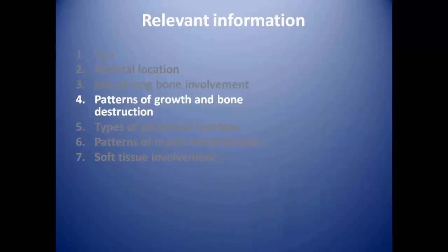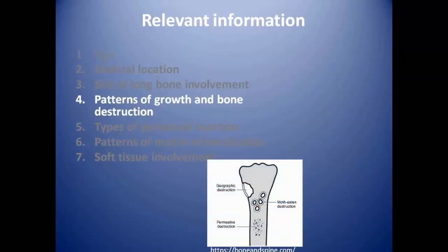Then comes the pattern of growth and bone destruction. Bone tumors can have a geographic pattern of bone destruction or a moth-eaten and permeative pattern. Geographic pattern points toward a benign entity, whereas malignant lesions generally have a moth-eaten or permeative pattern of bone destruction.